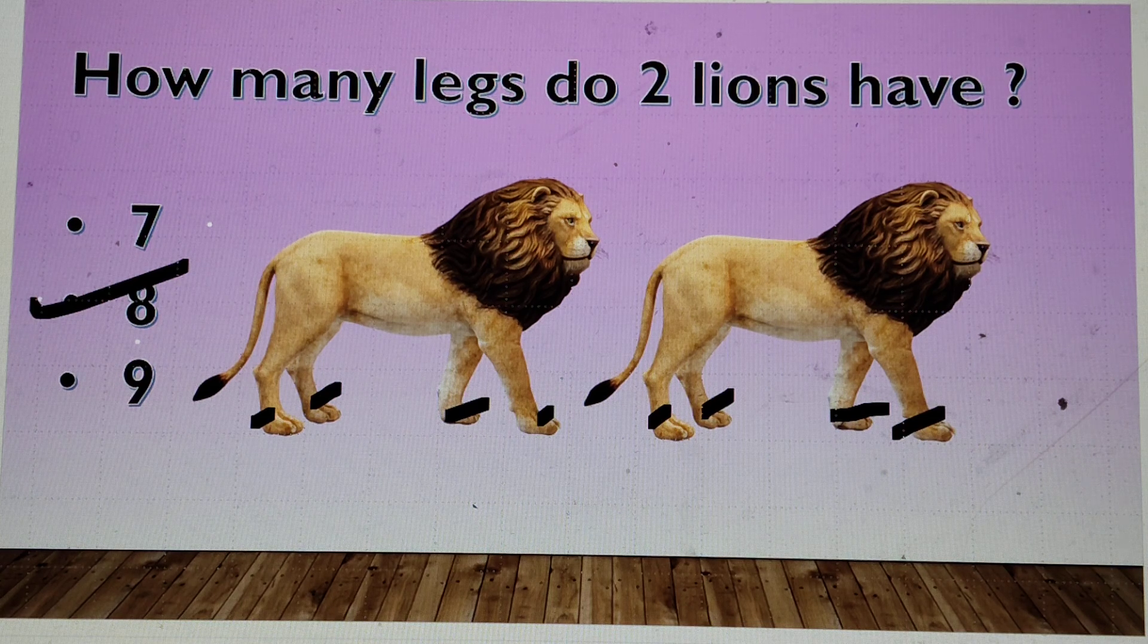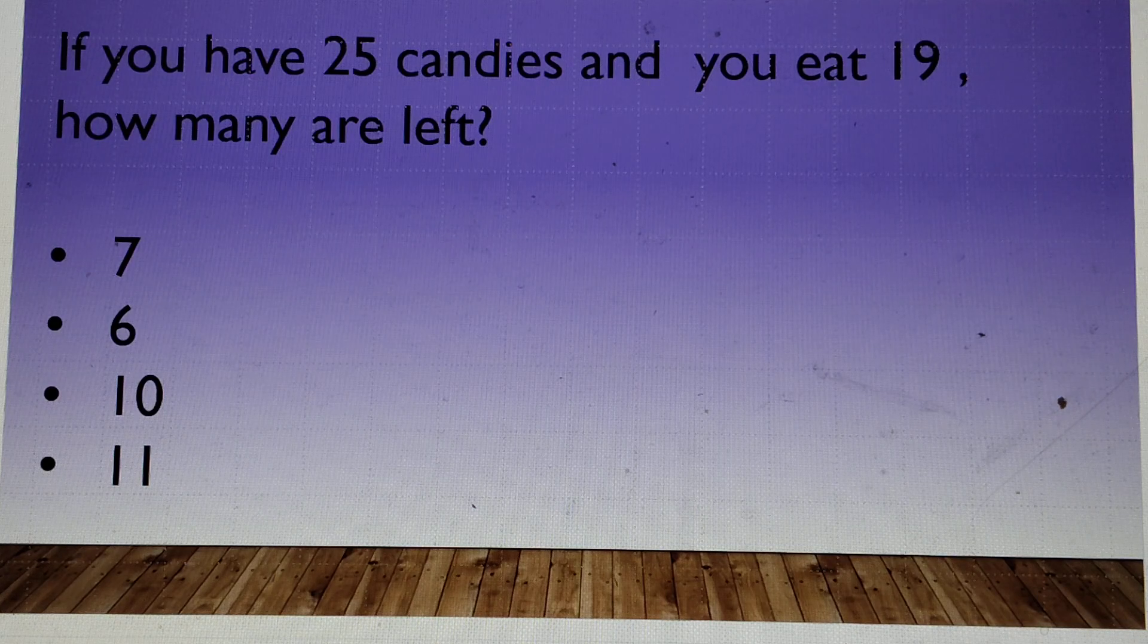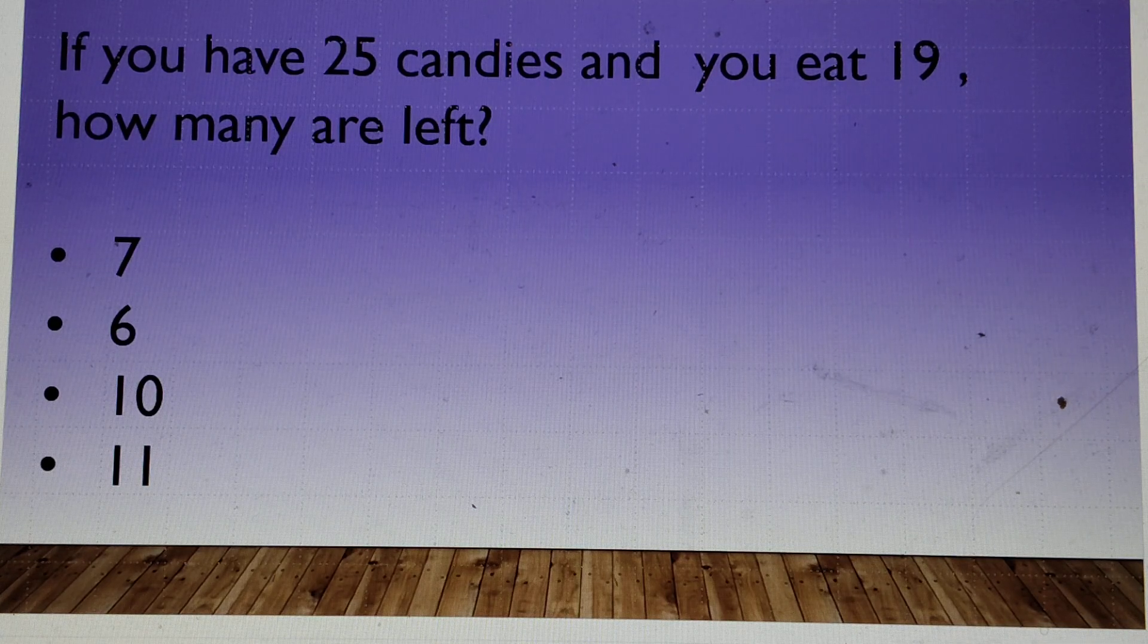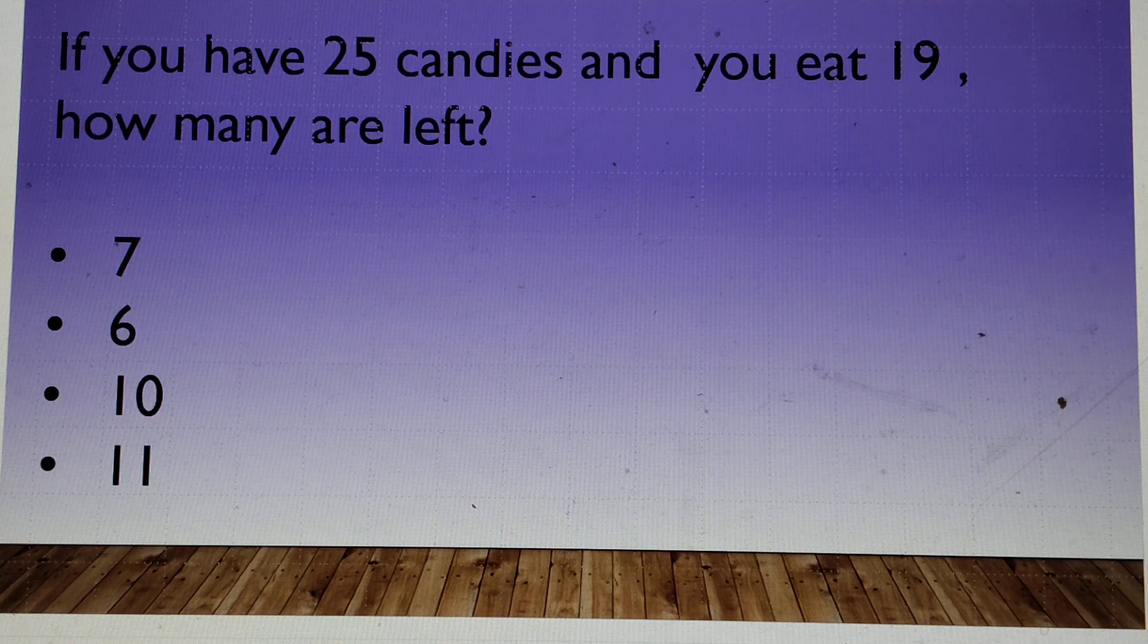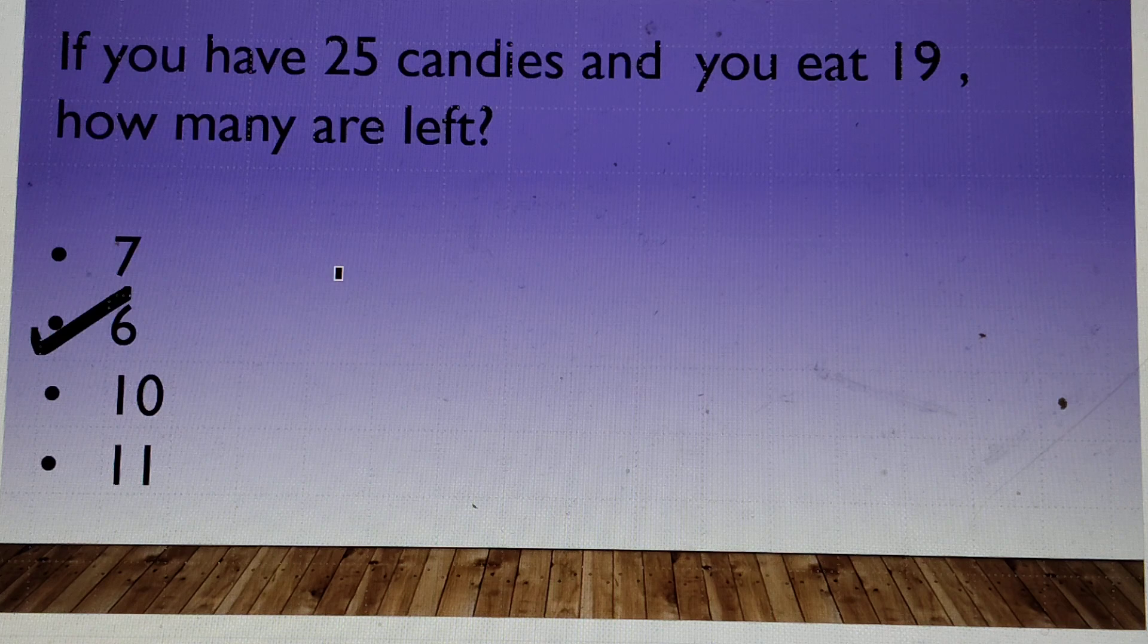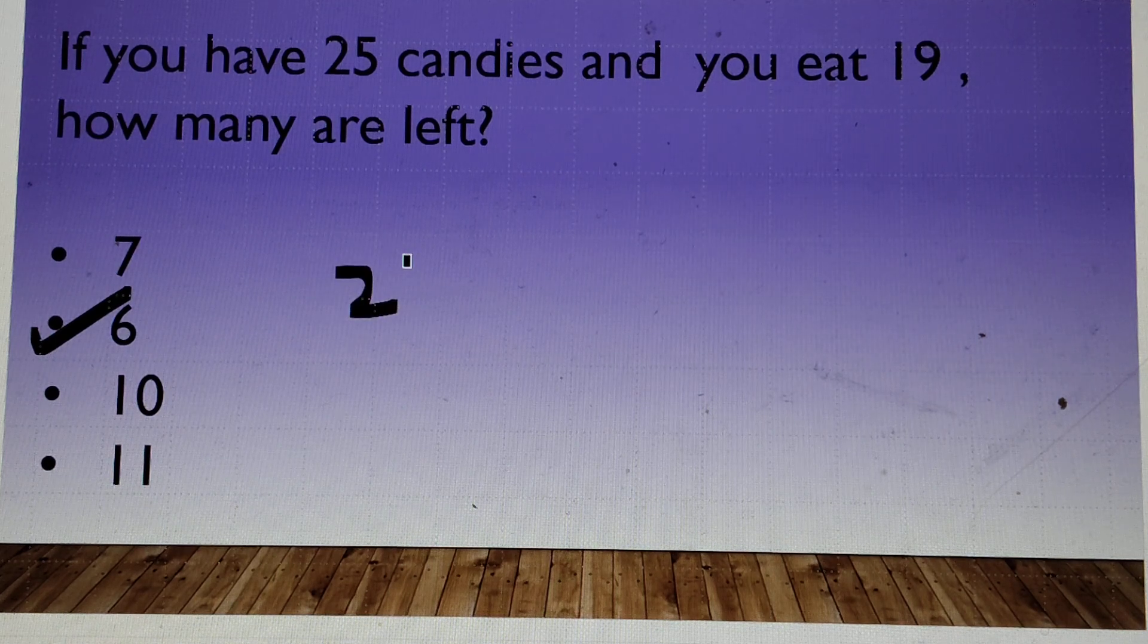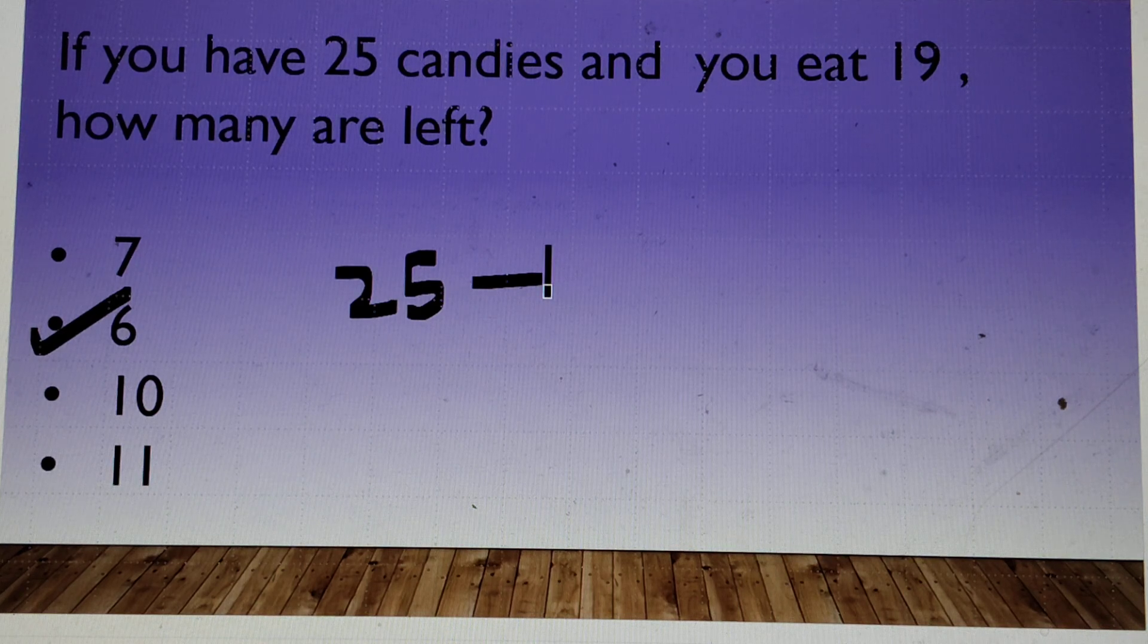Let's move to the next question. If you have 25 candies and you eat 19 out of them, how many are you left with? 7, 6, 10 or 11? 6. The answer is 6 because you have to minus 19 from 25. So 25 less 19.